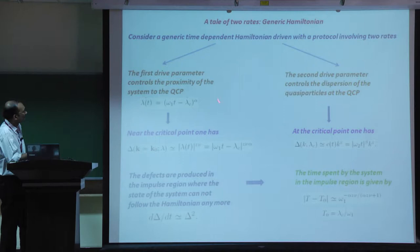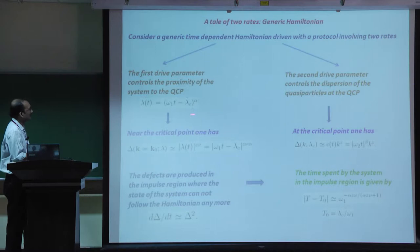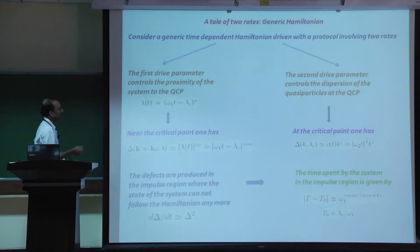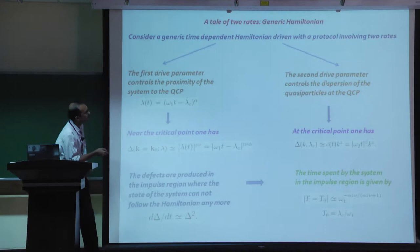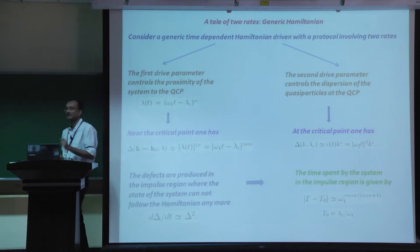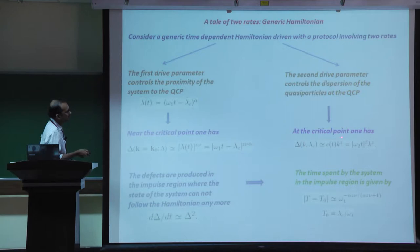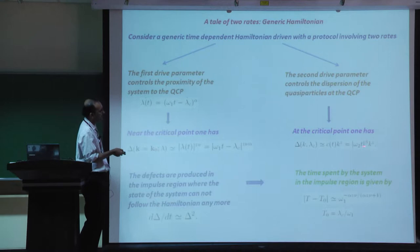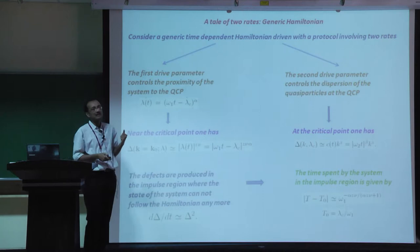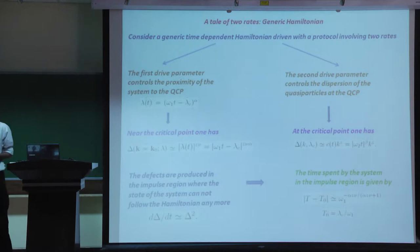For a generic time-dependent Hamiltonian with two-rate drive: the first rate controls proximity to a quantum critical point at lambda_c, governed by omega_1, so the system enters the critical point at t_0 = lambda_c/omega_1. The second drive parameter controls the dispersion of quasiparticles at the critical point - it is the velocity of quasiparticles varying as a function of time. At the critical point the energy gap becomes c(t)*k^z where c(t) varies with exponent beta.